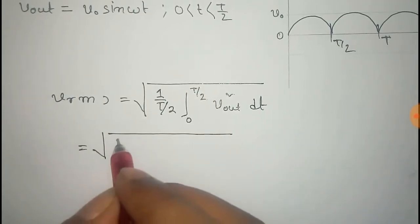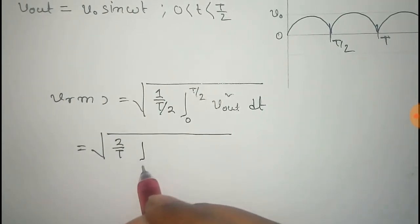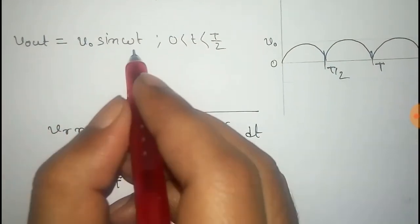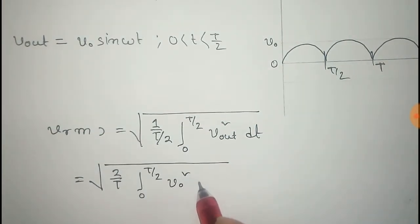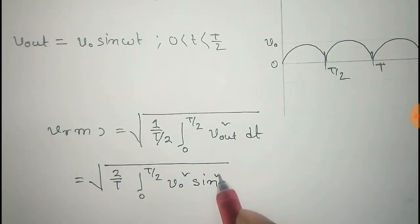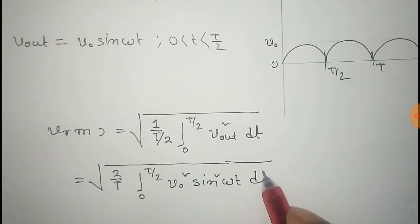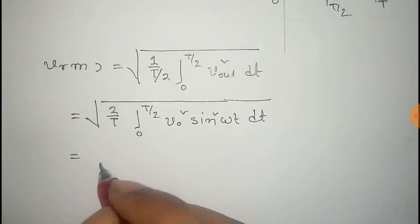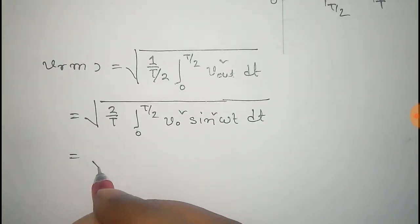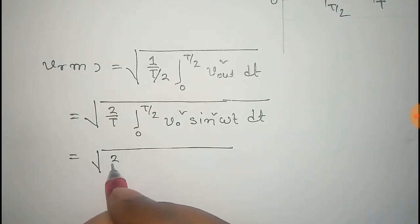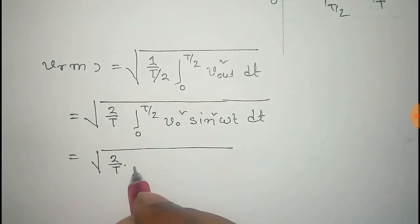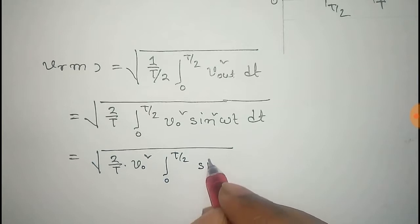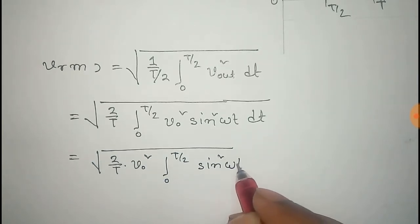That equals square root of (2/T), and substituting the value of V_output as V₀ sin(ωt), we get the integral of V₀² sin²(ωt) into dt, with the limit 0 to T/2. Taking V₀² out as a constant, we have V₀ times square root of (2/T) times the integral from 0 to T/2 of sin²(ωt) dt.